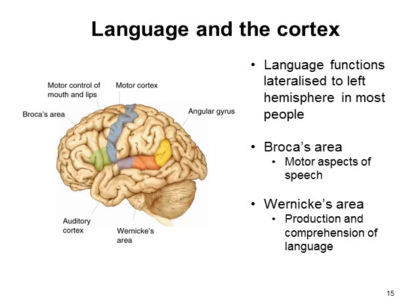Language function is almost always lateralised to the left hemisphere in the vast majority of people. The two major areas you need to know are Broca's area and Wernicke's area. Broca's area deals with the motor aspects of speech — control of the tongue, lips, mouth and throat — and is very closely related to the motor cortex, specifically the motor control of the mouth and lips. Wernicke's area is concerned with the production and comprehension of language, located very close to the auditory cortex, because you need to hear language to be able to comprehend it.